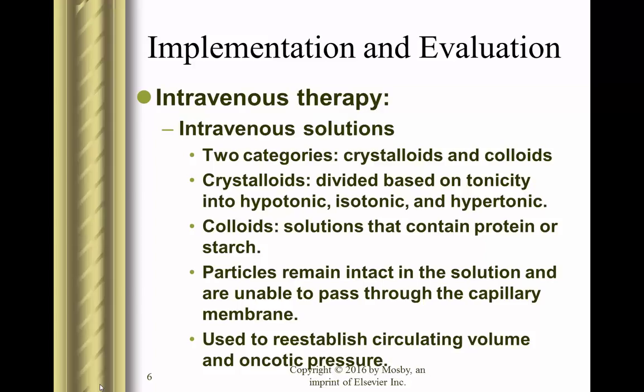When we institute IV therapy, there are two categories of IV solutions: crystalloids and colloids. Crystalloids are divided based on their tonicity — hypotonic, isotonic, or hypertonic. Colloid solutions contain protein or starches and help either keep fluid in the vascular system or pull fluid from tissues back into the vascular system based on changes in pressures within the vascular system.